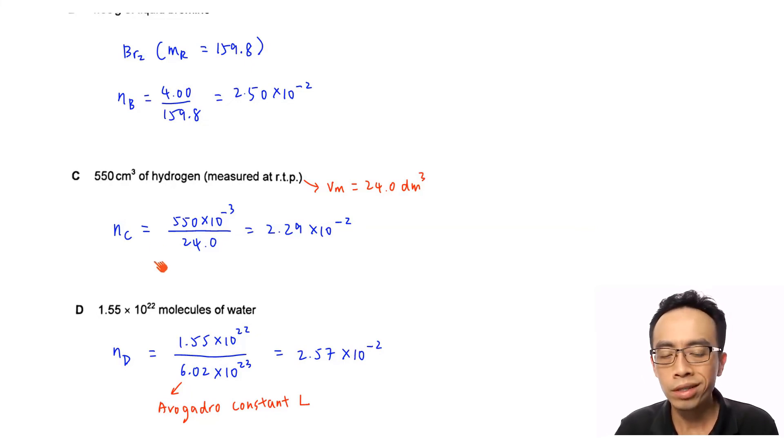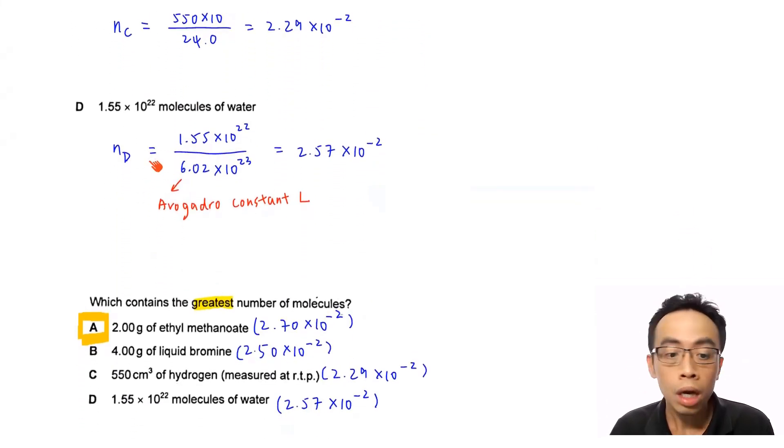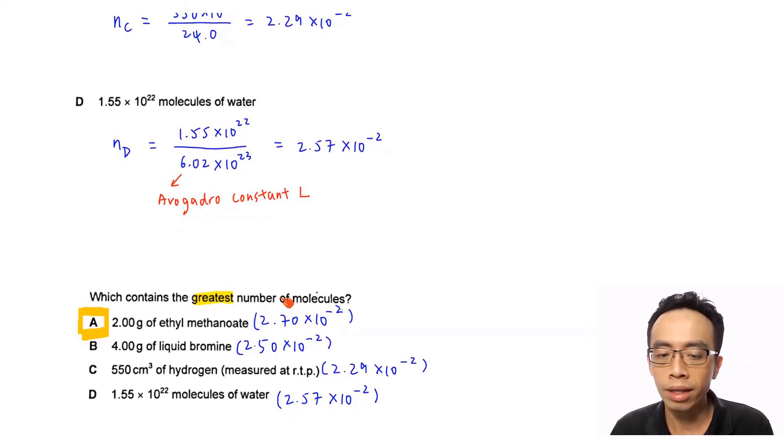So, we have effectively calculated all these number of moles. Then, we can do the comparison and compare which has the greatest number of molecules, which also means the greatest number of moles. So, option A, the number of moles is 2.70 × 10⁻². Option B, 2.50 × 10⁻². Option C, 2.29 × 10⁻². Option D, 2.57 × 10⁻². So the options and the answers are very, very close. But, of course, they are significantly different and in this case, option A will be the one that contains the greatest number of molecules.